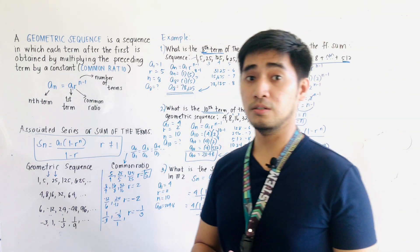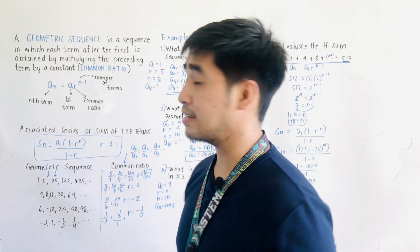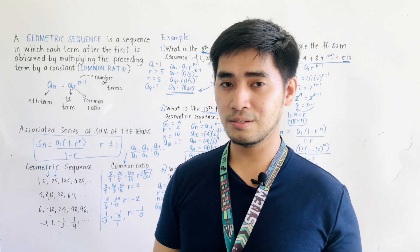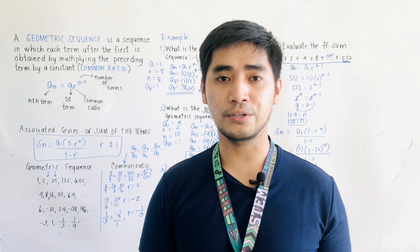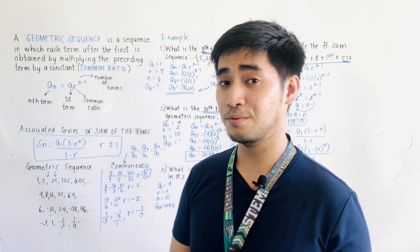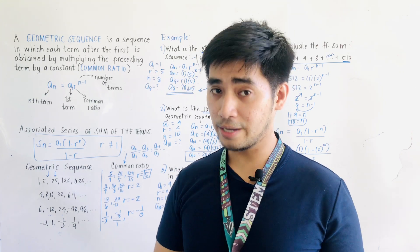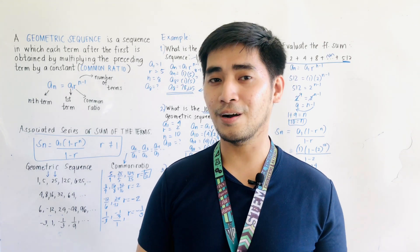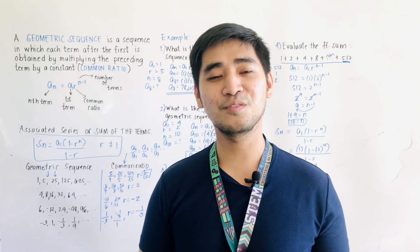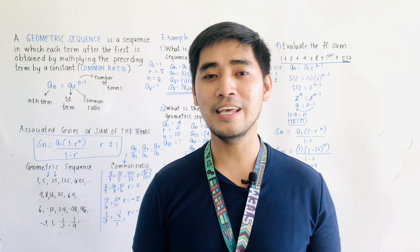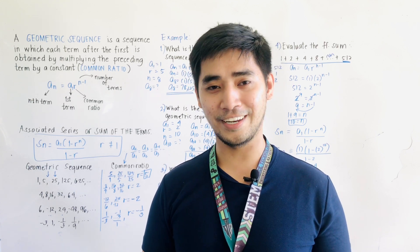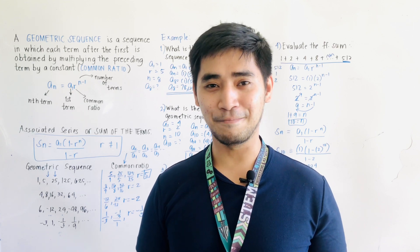That is how we solve for geometric sequence and series. The formula for the nth term is AN equals A1 times R raised to N minus 1. For the associated series or sum of terms, the formula is SN equals A1 times the quantity 1 minus R raised to N, all over 1 minus R, where R should not equal 1. I hope you learned something. I am Engineer John Edward Hernandez — mathematics is always fun. Goodbye and God bless!